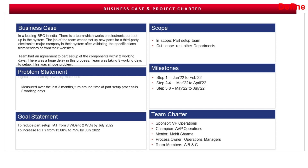Once the problem was identified, the goal statement was taken. There were two goals: first, to reduce the part setup from eight working days to two working days; second, to increase the rolled first pass yield from 13.68% to 75% by July 2022. The scope was only the part setup team; the rest of the departments were out of scope. The project ran from January 2022 to July 2022. The team charter included sponsor, champion, mentor, process owner, and team members.